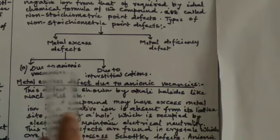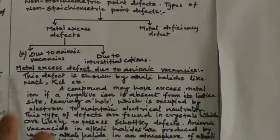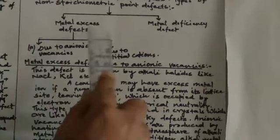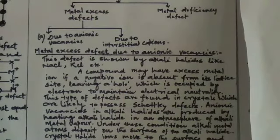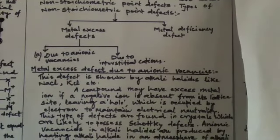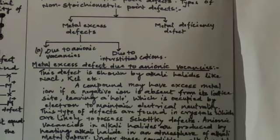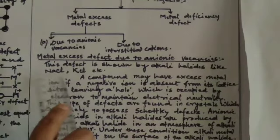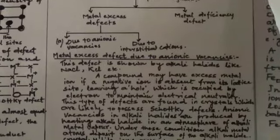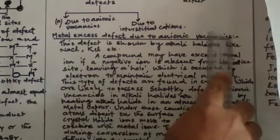Metal excess defect may be due to anionic vacancy — that means some anions are missing from the lattice site, so metal ions will be in excess. Or, metal excess can also be caused due to the presence of some extra cation in the interstitial site. Let us understand metal excess defect due to anionic vacancy first.